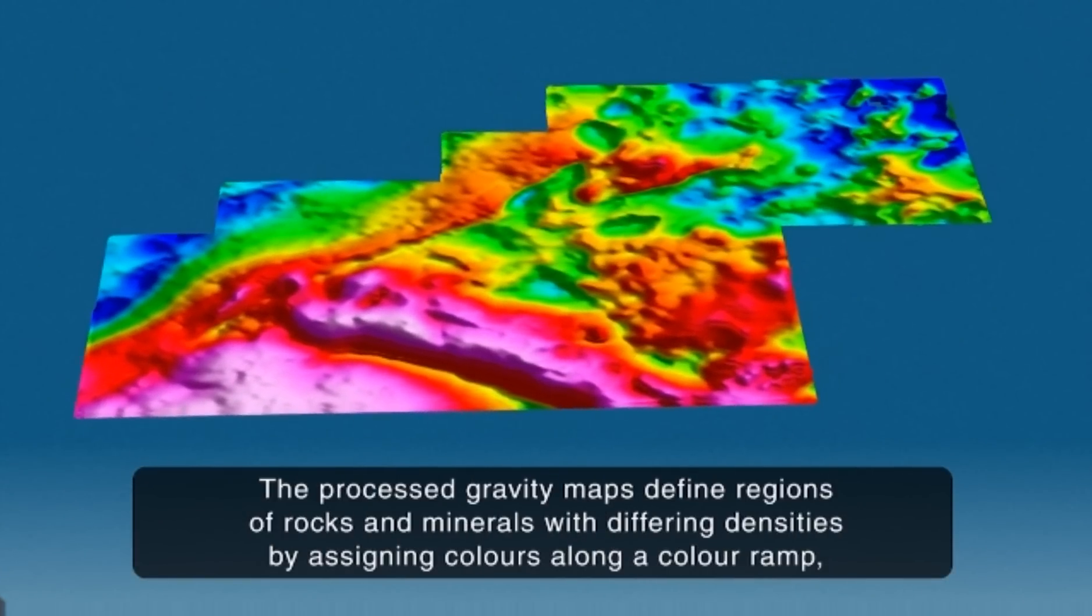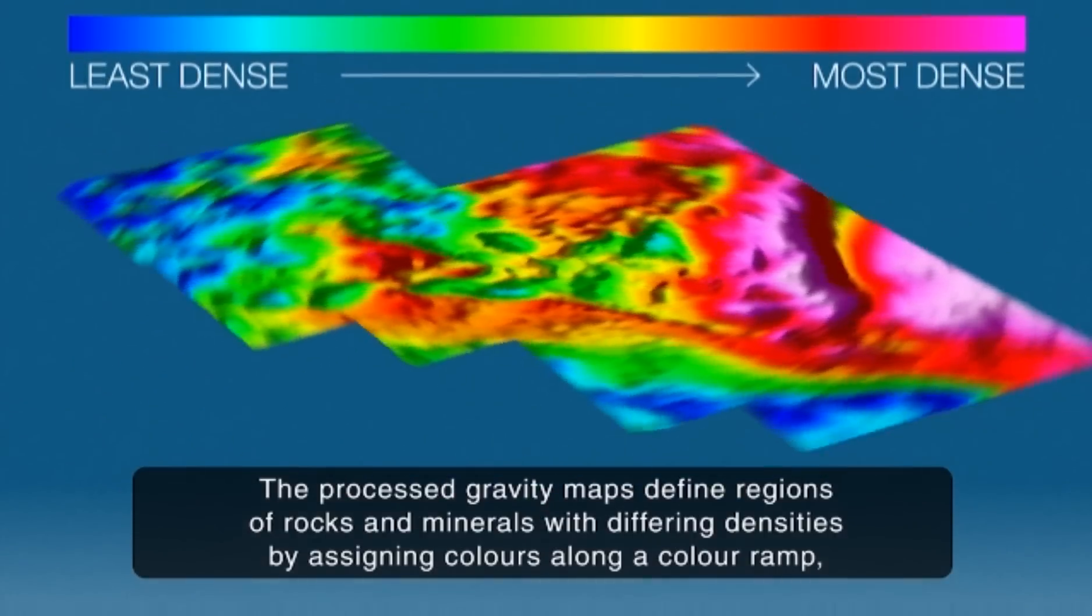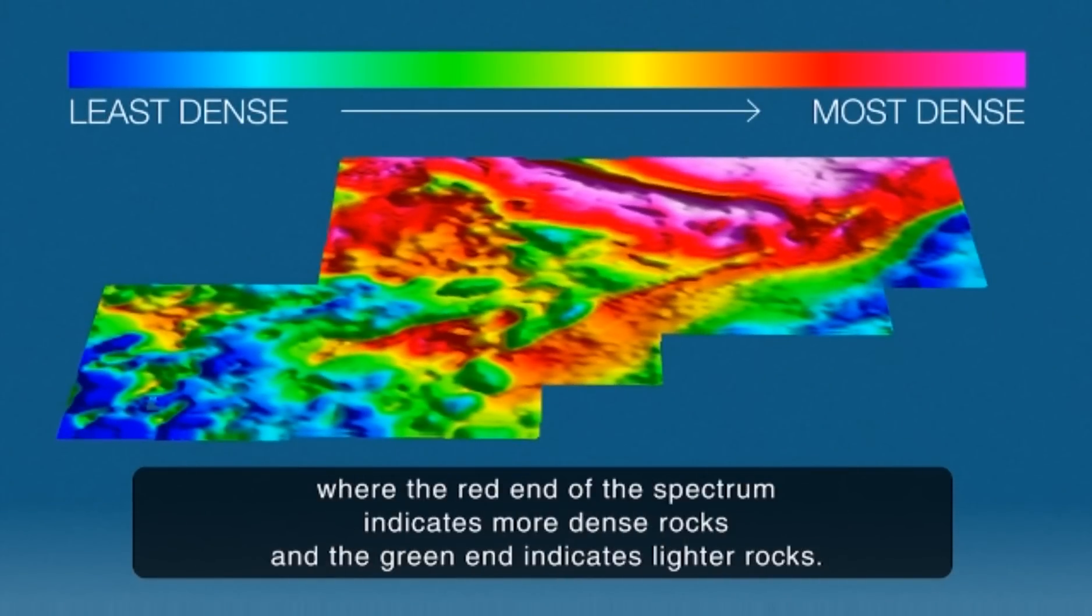The processed gravity maps define regions of rocks and minerals with differing densities by assigning colors along a color ramp, where the red end of the spectrum indicates more dense rocks and the green end indicates lighter rocks.